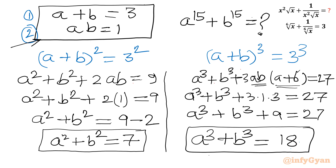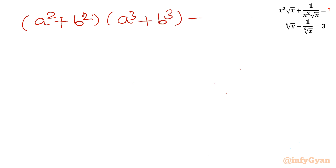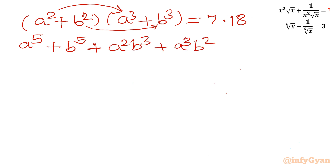Now I will calculate a⁵ + b⁵. I will multiply (a² + b²) × (a³ + b³) = 7 × 18 = 126. Expanding: a⁵ + b⁵ + a²b³ + a³b² = 126, which gives a⁵ + b⁵ + a²b²(b + a) = 126.